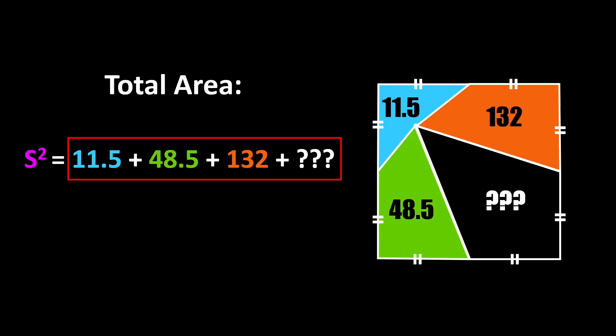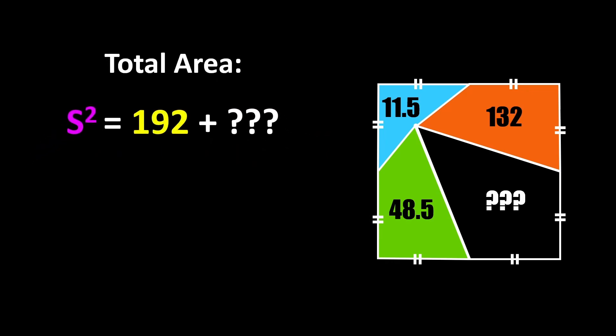We can then simplify this to 192 plus the unknown area which we can call x. And really quick I'm going to subtract over the 192 since what we're trying to solve for is the x term.